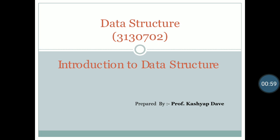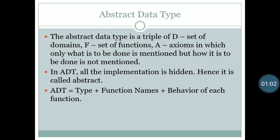So in our third lecture we are going to study about ADT. ADT is basically Abstract Data Type. The meaning of abstract is, in short, information which is hidden from us. Abstract Data Type is a triple — A, D, and F — where A means axioms, D means set of domains, and F means set of functions. ADT only specifies what is to be done, but how it is to be done is not mentioned — it is abstract for us.